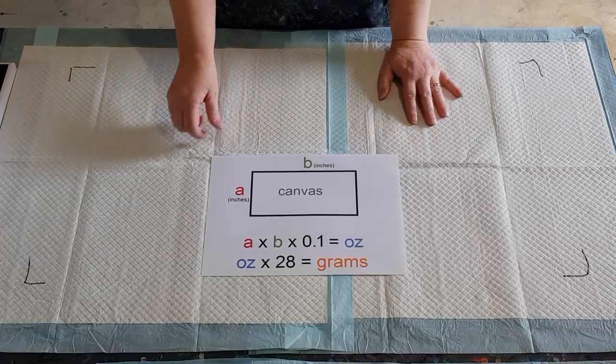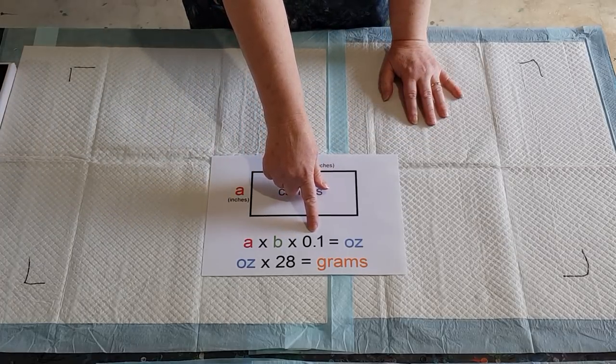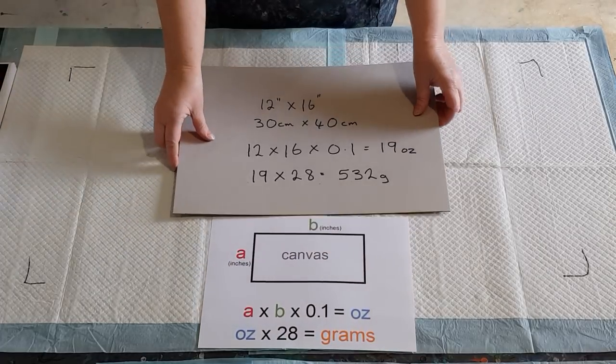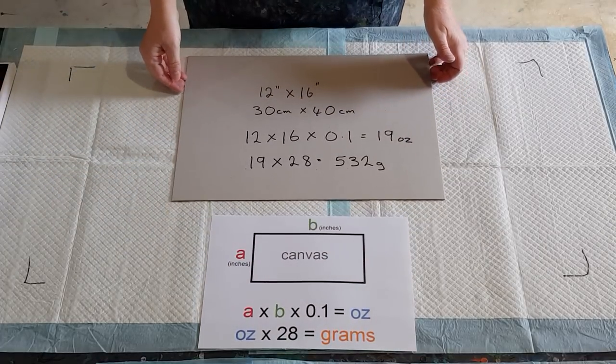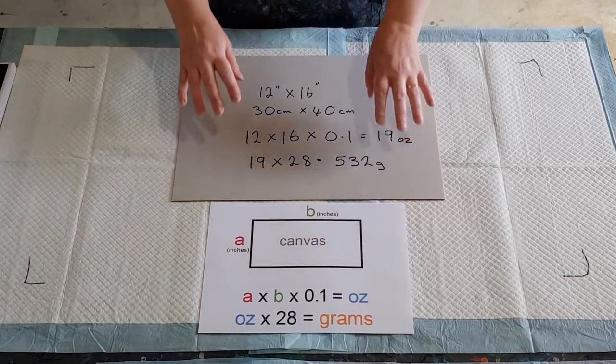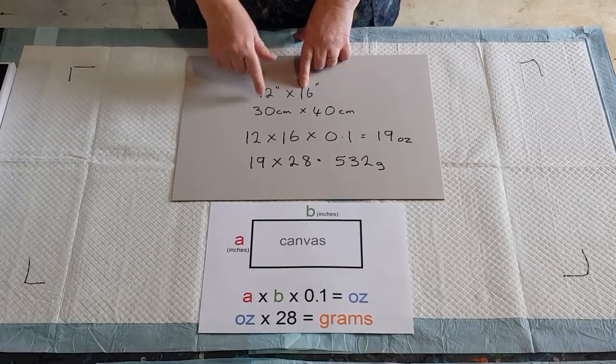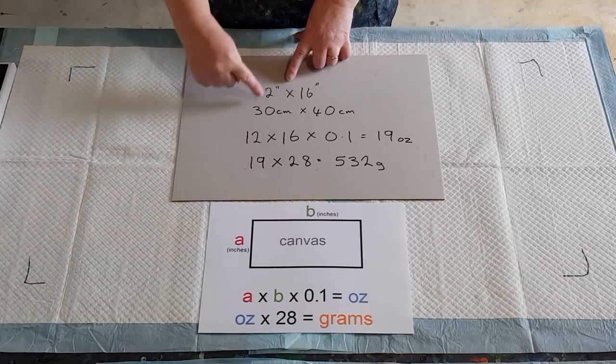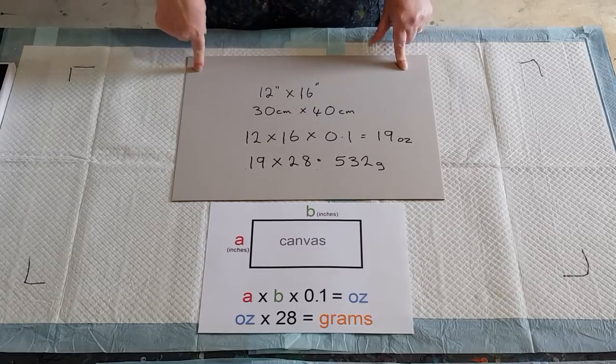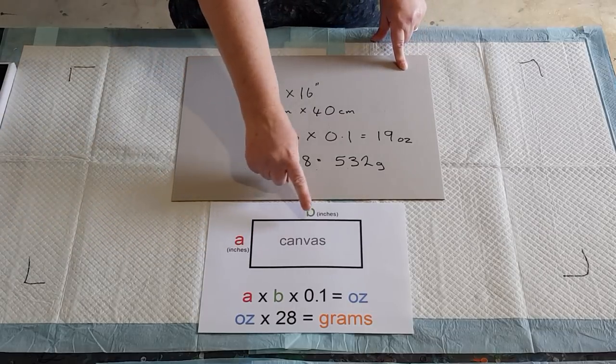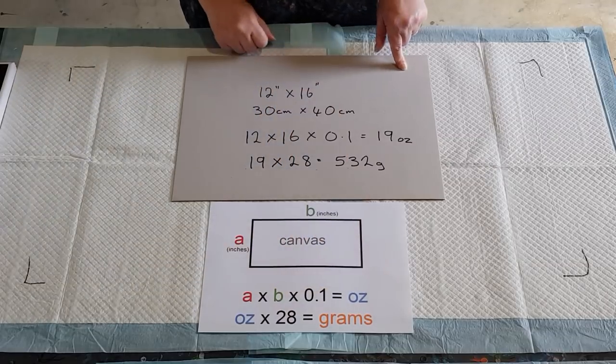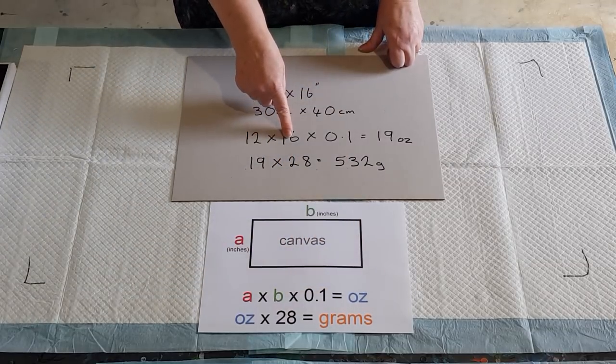For instance, here we go for this size which is my card that I use. If we're using this formula, we use inches as it says here. So one side is 12 inches, that side is 16 inches. So we're going 12 by 16 inches times 0.1 gives you the ounces. So 12 by 16 times 0.1 gives you 19 ounces.